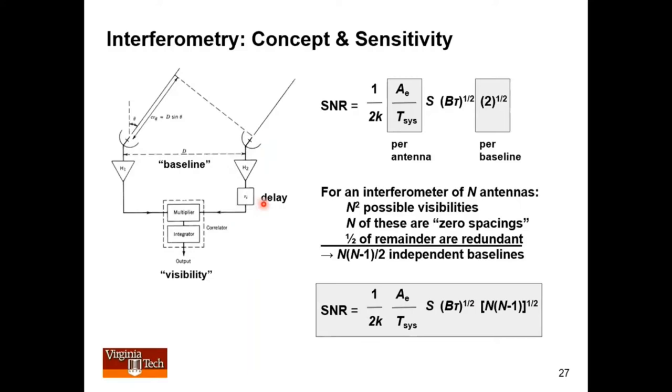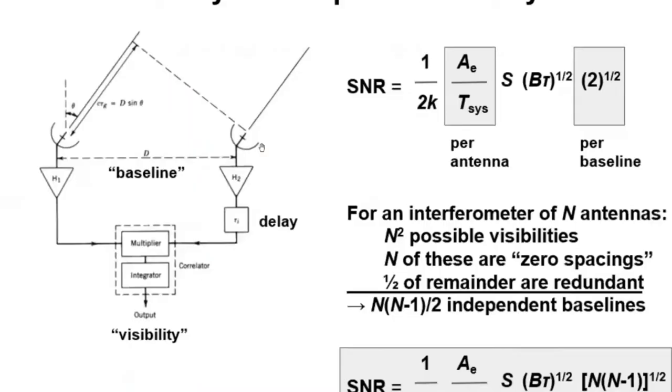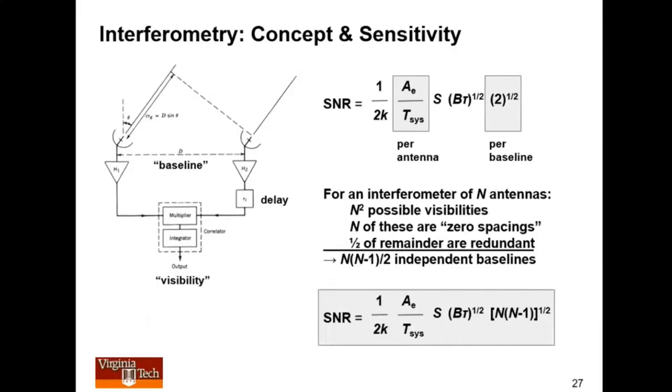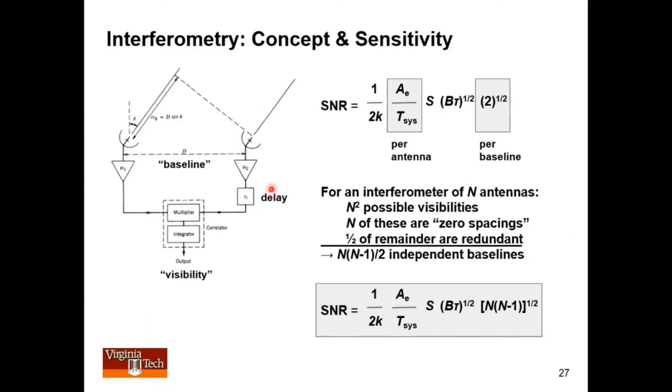We delay one of the antennas, depending on which direction we want to look at, because we want all the phases to line up at least at one frequency along the line here. So there's a delay.